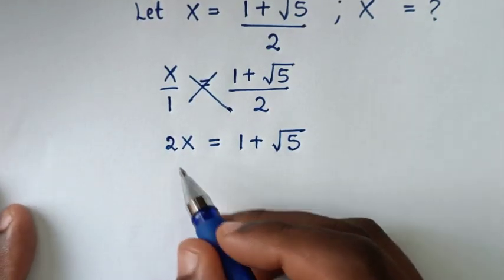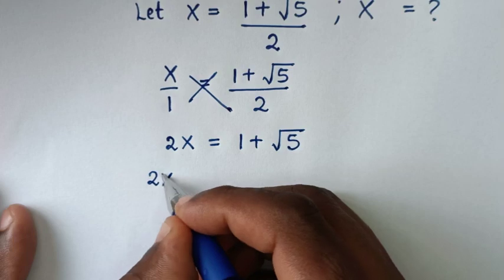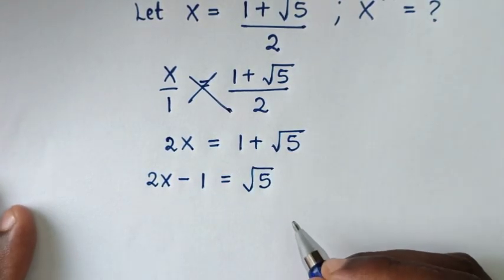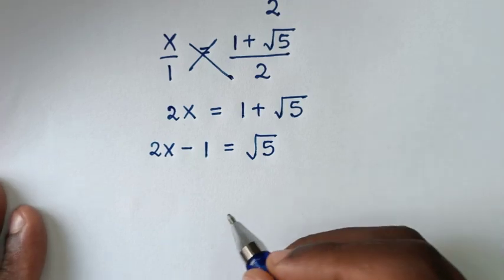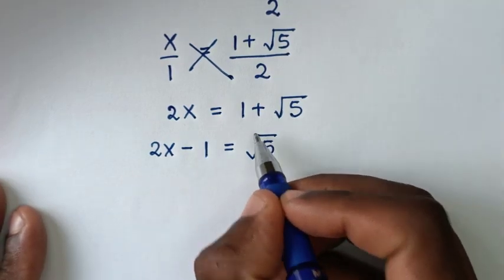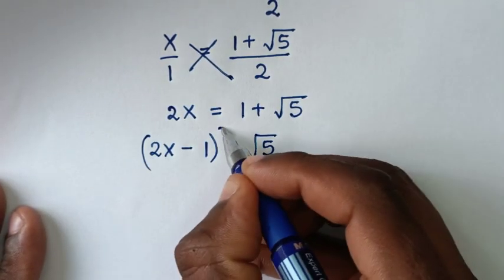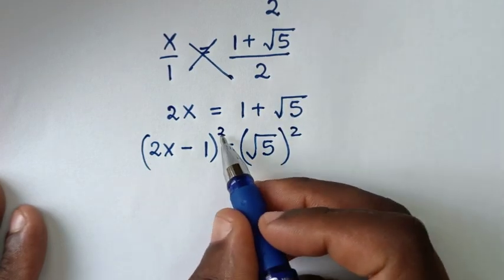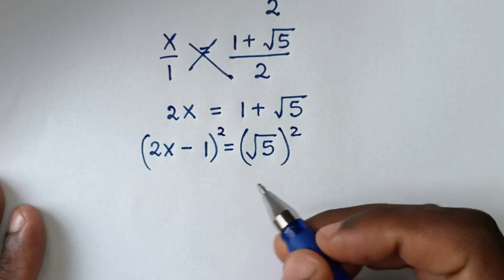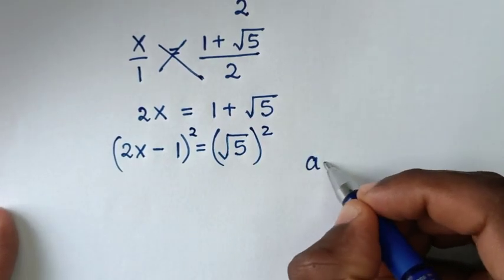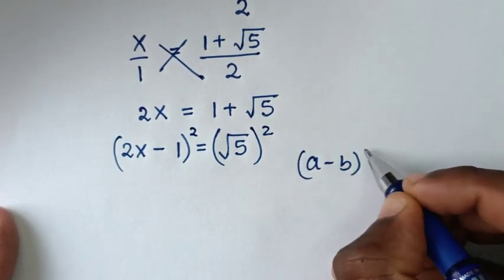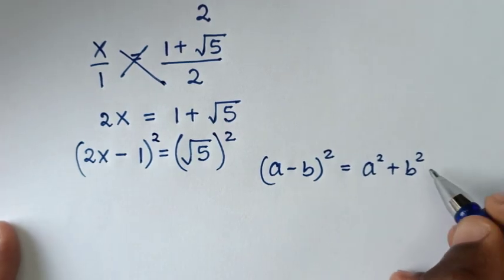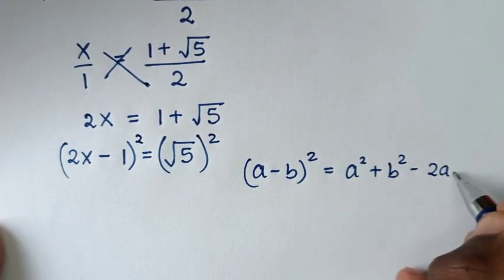Then we'll take 1 to the left side, so it will be 2x minus 1 equals square root of 5. Then in the next step, to remove this square root, we'll square both sides. From this side, (2x minus 1) squared is in the form of (a minus b) squared, which equals a squared plus b squared minus 2ab.